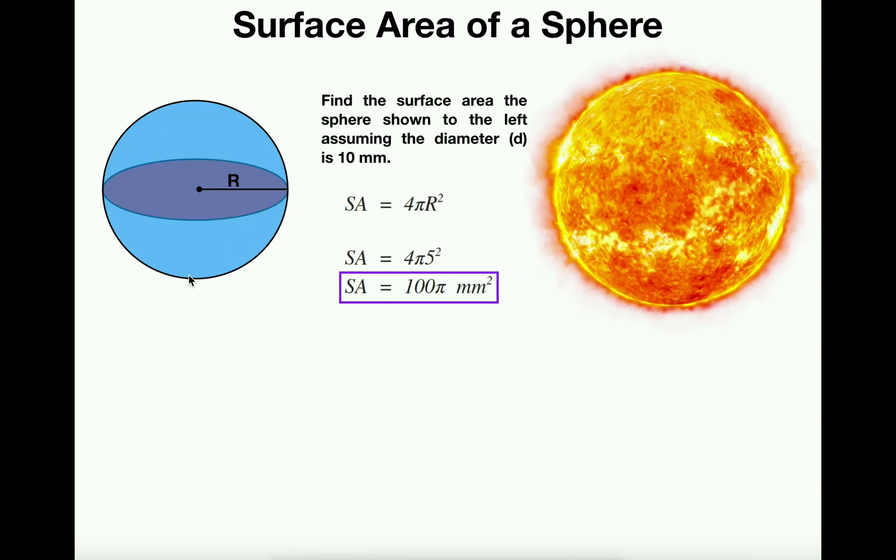And in order to calculate the surface area of the sphere, you just use this formula, 4πr². And that's it.